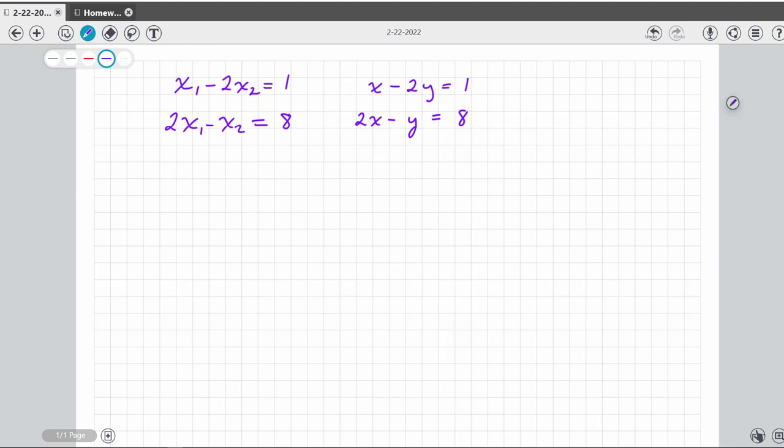Okay, so if I first write these in a matrix, notice it's understood there's a 1 there, there's a negative 2, and then a 1, and then the second equation, a 2. Remember, it's understood there's a negative 1 there, and then there's an 8. The final goal is to get this matrix to look like that, and when it looks like that, those are my answers.